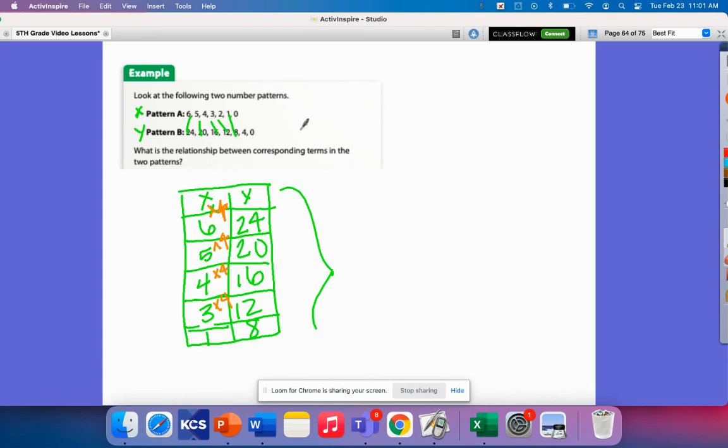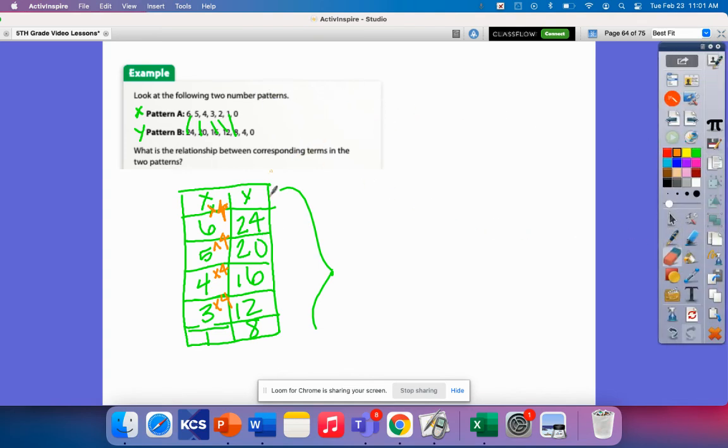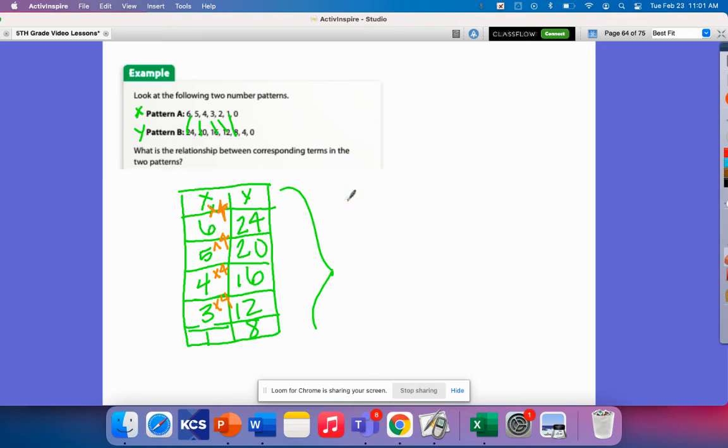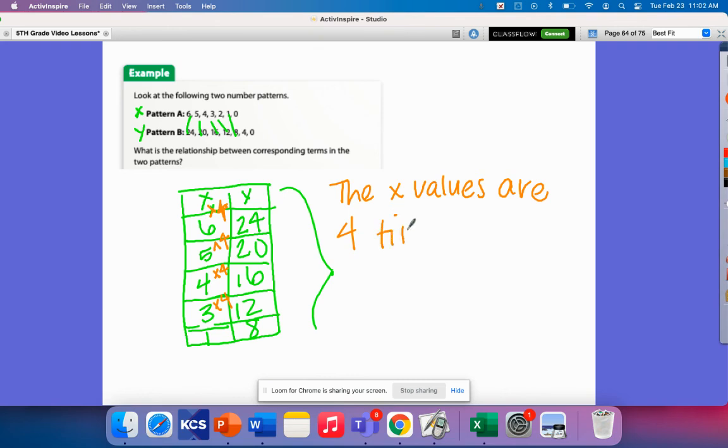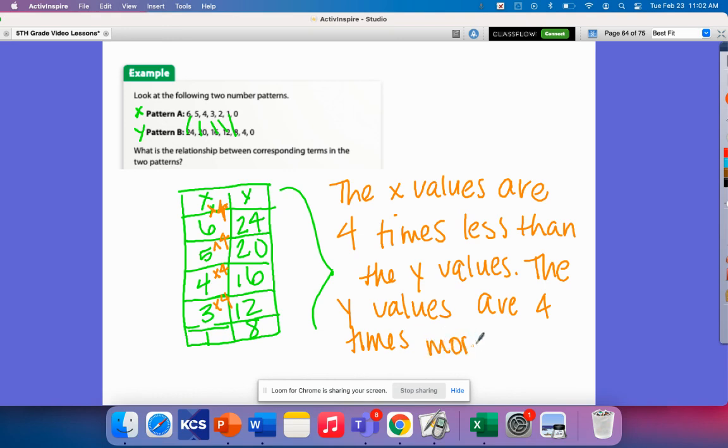Okay, so I can see here that if I... These are 4 times more. 4 times more. The X values are the... Maybe I should say the X values... Well, let me say just the X values are 4 times less than the Y values. Or I can say the Y values are 4 times more than the X values. All right, that is all for today's lesson in analyzing patterns and relationships.